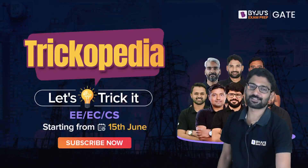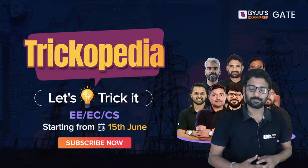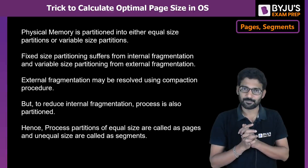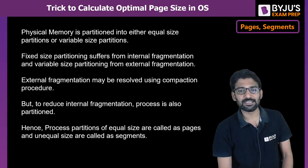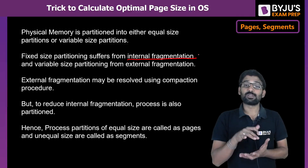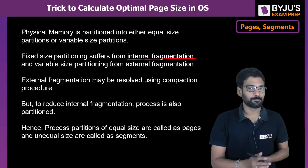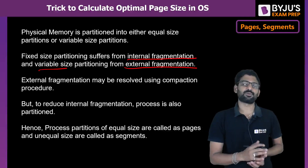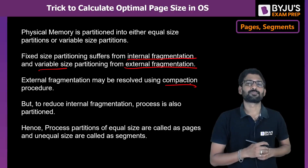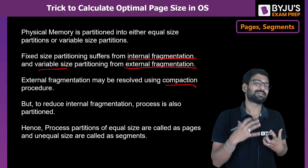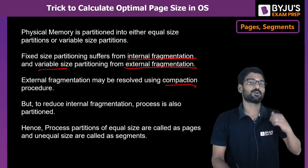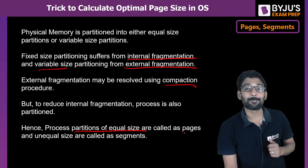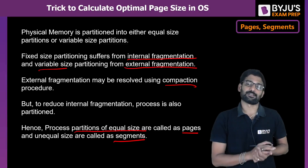In operating systems, there is a concept of partitioning. Memory is partitioned for better usage into either equal size or unequal size. We have the drawback of internal fragmentation with fixed size partitioning, and external fragmentation with variable size partitioning. External fragmentation can be addressed with compaction, but internal fragmentation persists. To address internal fragmentation, the process itself is also partitioned into logical partitions — equal size partitions are called pages, and unequal size are called segments.